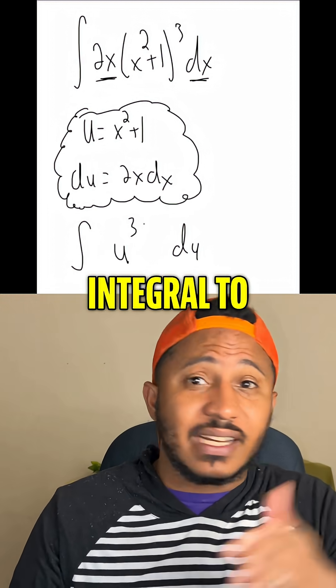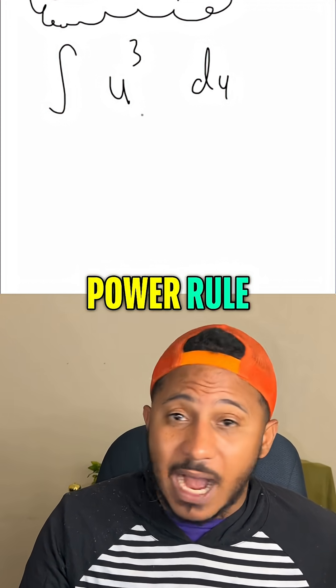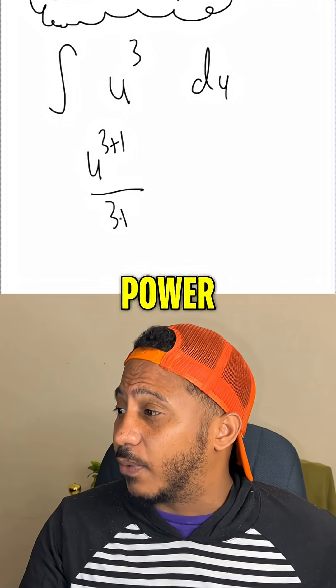Now it's a lot easier integral to integrate. And so integrating this, we would say this is the integral of u cubed du. We use our power rule, so that's u to the 3 plus 1. Add 1 to the power, divide by that new power.